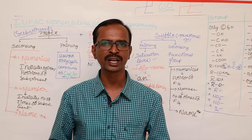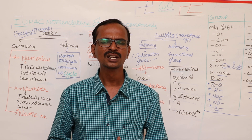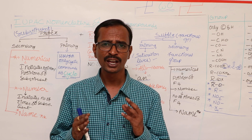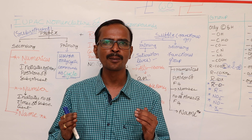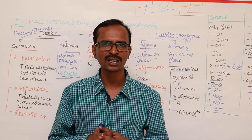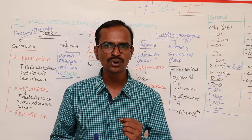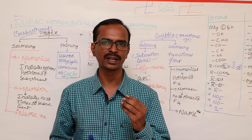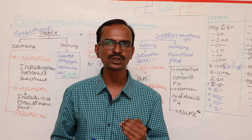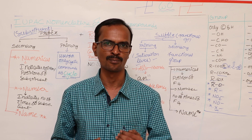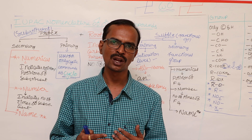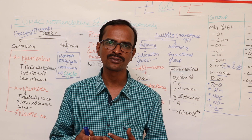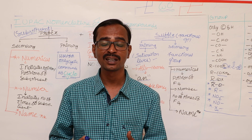In my first video, I would like to explain the IUPAC nomenclature of organic compounds. What is the need and necessity of this IUPAC nomenclature? IUPAC means International Union of Pure and Applied Chemistry. All scientists all over the world gathered together and started this organization to provide uniformity in the naming of organic compounds. They gave rules and regulations to name organic compounds. In this video, I am going to cover IUPAC nomenclature of aliphatic compounds. In further videos, I will extend to nomenclature of aromatic compounds, bicyclic compounds, as well as NARBOR name systems.